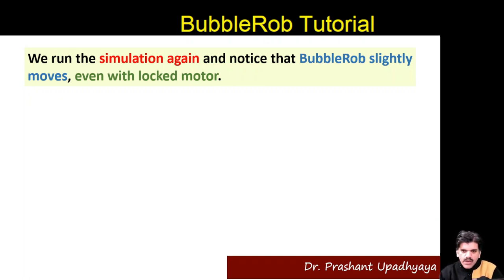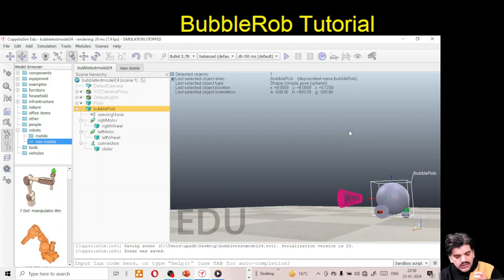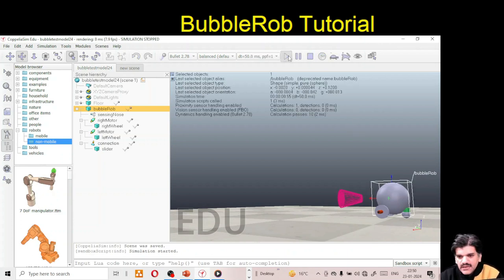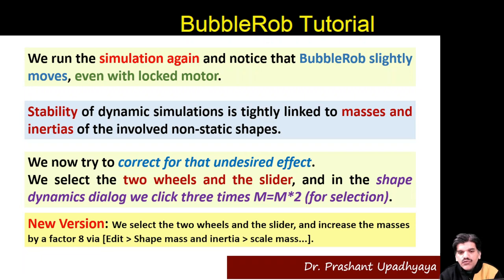Run the simulation again. We notice the bubble robot still moves slightly even with the motors locked — the robot is not fully stable. We locked the motors in the previous video but there is still undesired movement. To fix this we need to adjust the mass and inertia of the body. First we added the slider; now we also need to increase the mass and inertia.